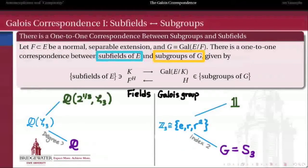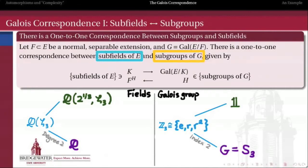Not only that, the fact that this subgroup on the right is an index-2 subgroup of S3 also guarantees that the field extension from Q up to the fixed field of that subgroup is a degree-2 extension. The index of a subgroup and the degree of its fixed field are exactly the same thing — that's also why we use the same notation for the degree of a finite extension as for the index of a subgroup.